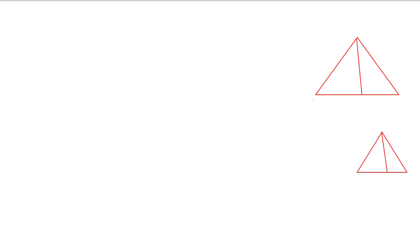We have two triangles — one smaller and one bigger. This is triangle ABC and this is triangle PQR. Here E is a point on AC and F is a point on PR, where BE and QF are the medians. We know that a median divides the opposite side into two equal parts.